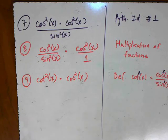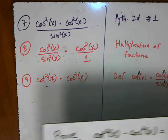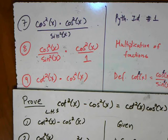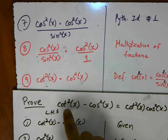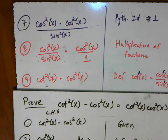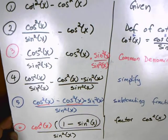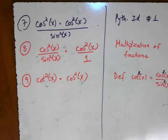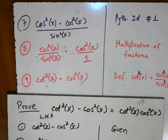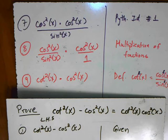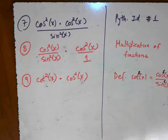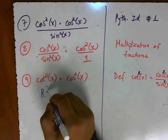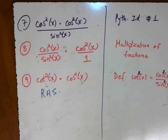And there we have it — this is the end of our proof. We started out with cotangent squared minus cosine squared, worked through all of these steps, and got to the point where we have cotangent squared times cosine squared, which is the same thing as the right-hand side. So we can say this is now equal to the right-hand side, and that ends our proof.